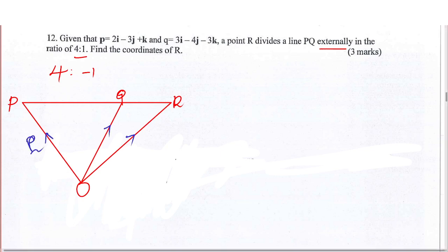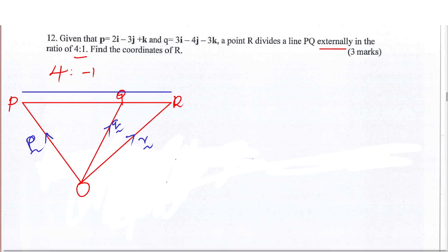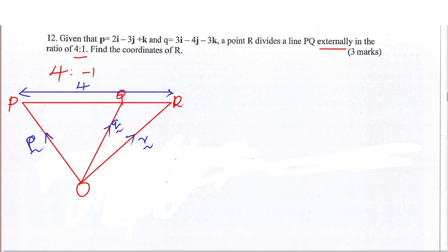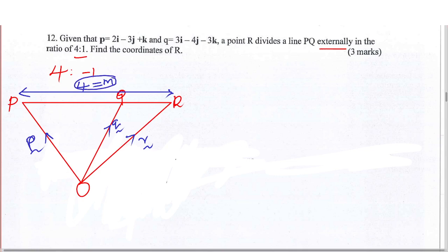So this is vector P, this is vector Q, and this is vector R. To get the coordinates of R, we shall calculate using position vector OR — that is what is going to help us get the coordinates of R. Now, this external division means the following. This distance of 4 implies the whole distance from P to R, and we shall let this 4 be denoted by M, because there is a formula I'm going to use to get vector OR.